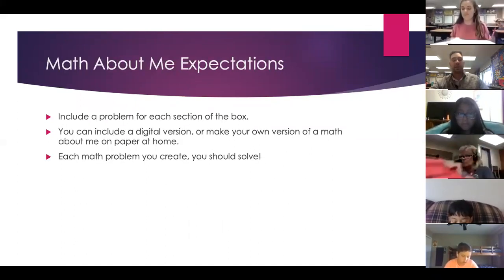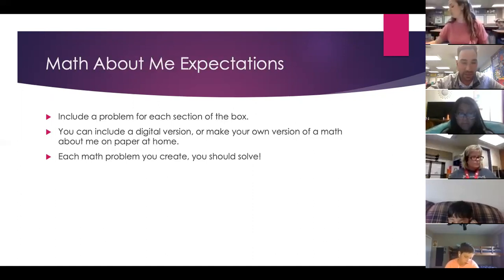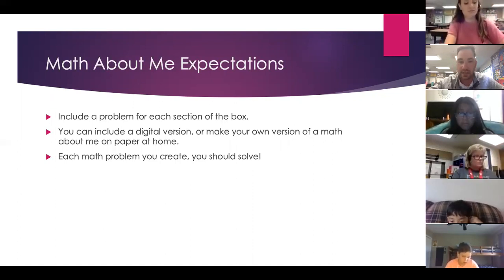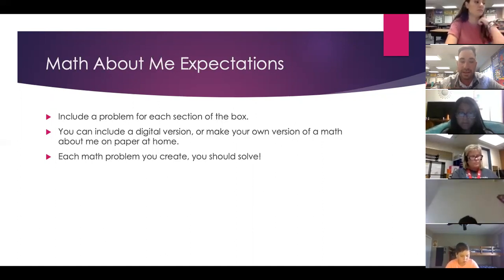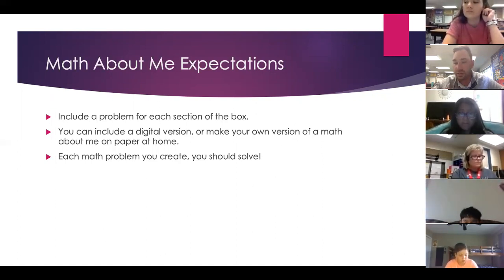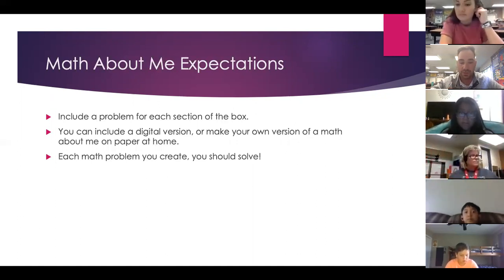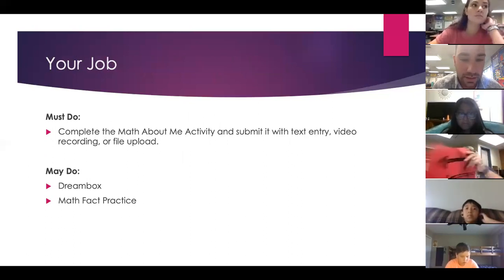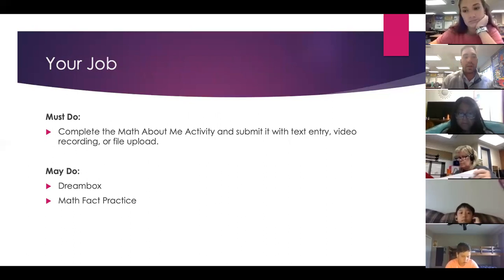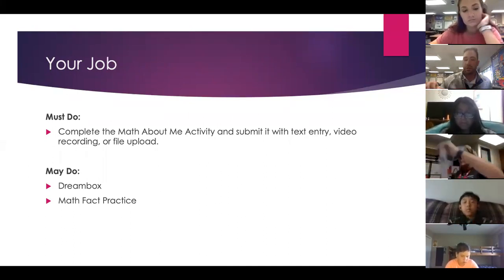Here are a few expectations: include a problem for each section of the box on the assignment. Include a digital version — you can either type up your answers and submit as text, make your own version with pictures at home, or use that paper as a guide. Each problem you create, you need to solve the problem — I don't want to just see a problem, and I don't want to just see the solution. I want to see the problem and the solution. Your job is to create the Math About Me problems, complete the activity, and submit it as text entry, video, or recording. When you're done, you can do DreamBox or practice math facts.